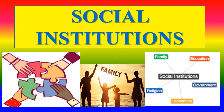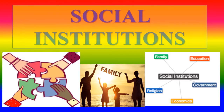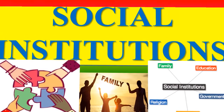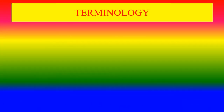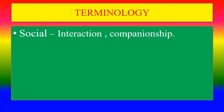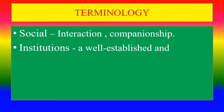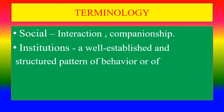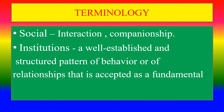Next section: Social Institutions. Terminology of Social Institutions — social interaction, companionship, institutions. A well-established and structured pattern of behavior or of relationship that is accepted as a fundamental part of a culture.